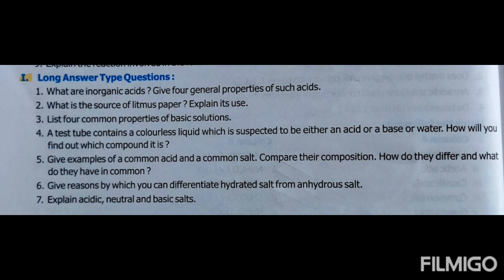What are inorganic acids and what are their properties? Inorganic acids include sulfuric acid, hydrochloric acid, and nitric acid — these are also called mineral acids, which are made in factories. Their properties: they are highly corrosive, when dissolved in water they give more H+ ions, they become electrolytes, and they are used in chemical labs.